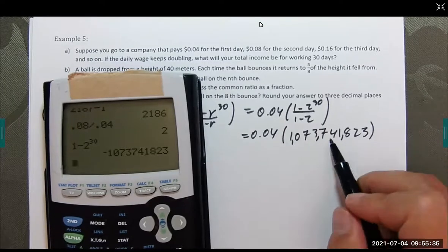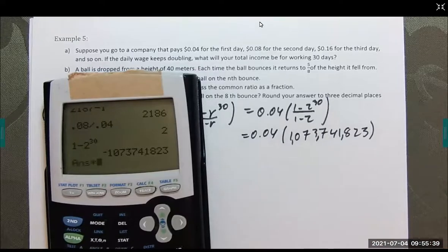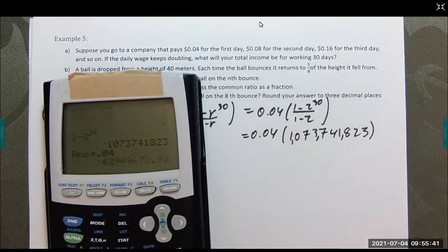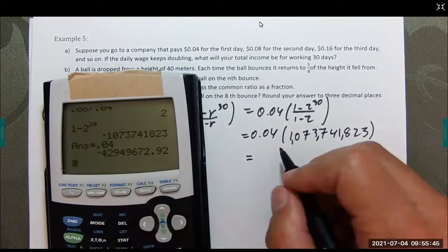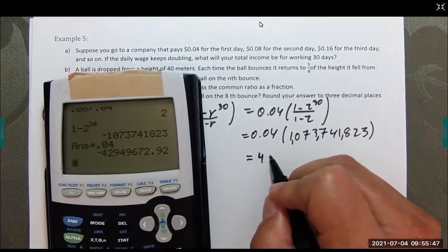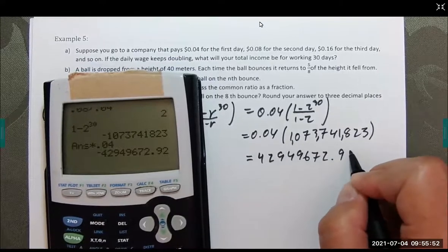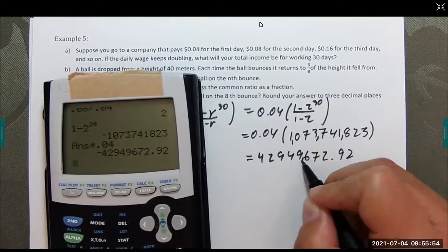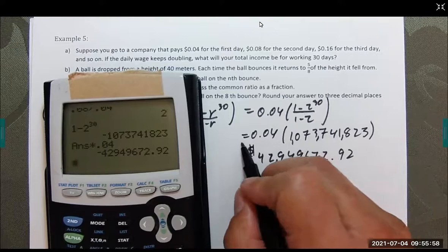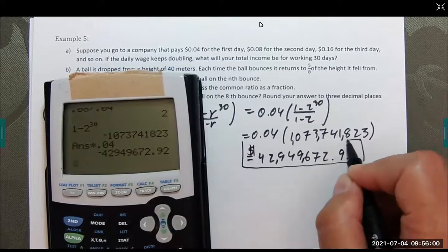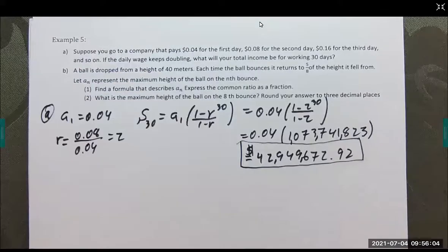That is a huge number. Over a billion, then times 0.04. It's not negative anymore. 42,949,672.92 cents. So 42 million dollars. That is a job worth taking.